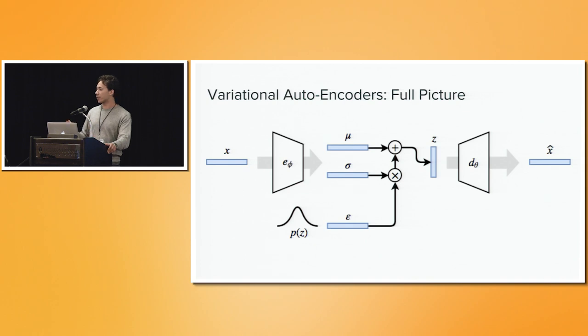If you put that together in a Gaussian assumption, it looks something like this, where you have your x high-dimensional input data point going through your inference network, which outputs your parameters, which creates a sample, and then reconstructs.